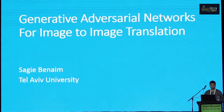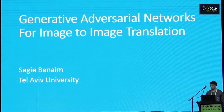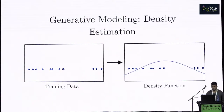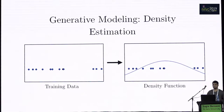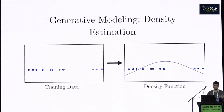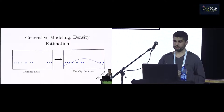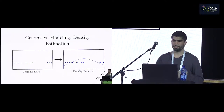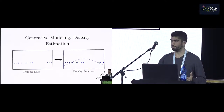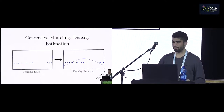I'm going to speak about generative adversarial networks, particularly for the problem of image-to-image translation. A generative adversarial network, or GAN, is part of a family of models called generative models. The idea behind generative models is that, given training data, you want to produce the density estimation of that data. But this training data, for example images, lives in a very high-dimensional manifold, so it's not possible to explicitly write a probability density function. What we want to do is estimate, using a neural network, this density function in order to sample efficiently from the distribution of the training data.